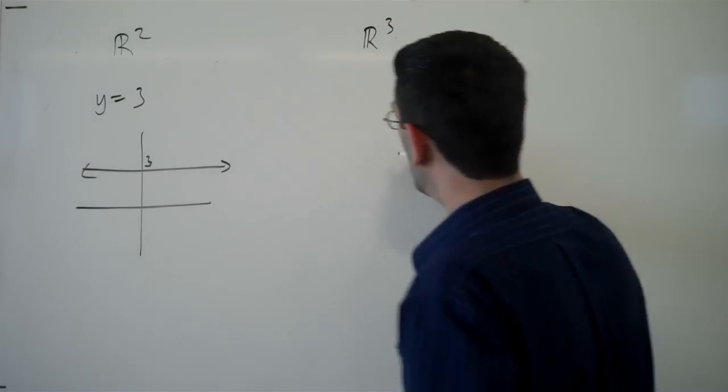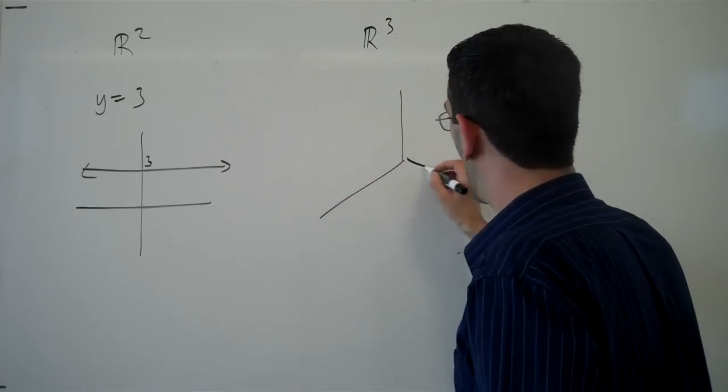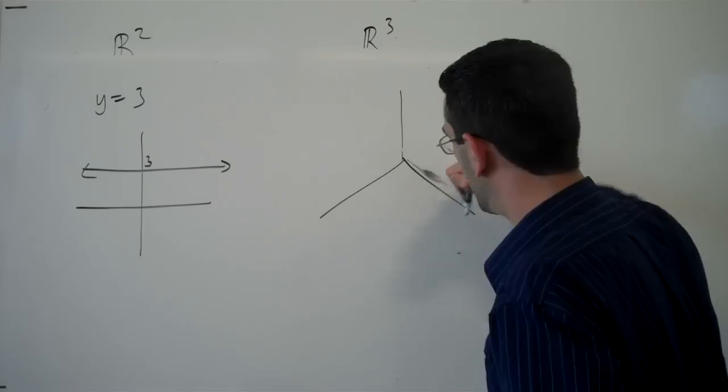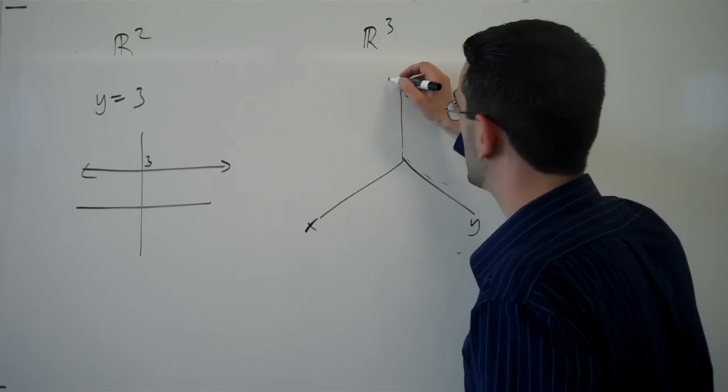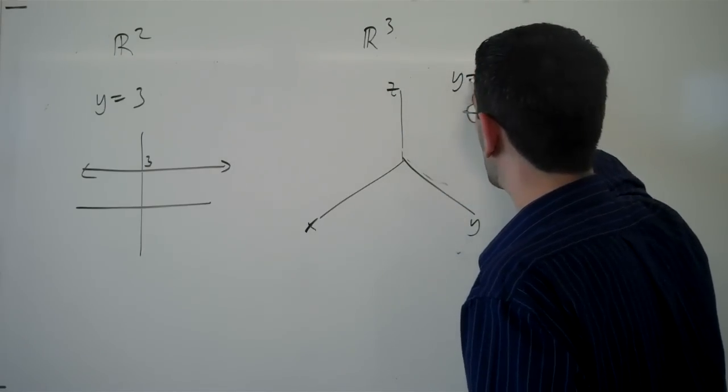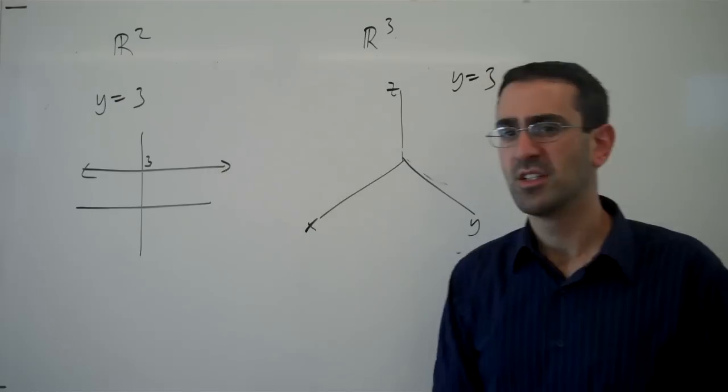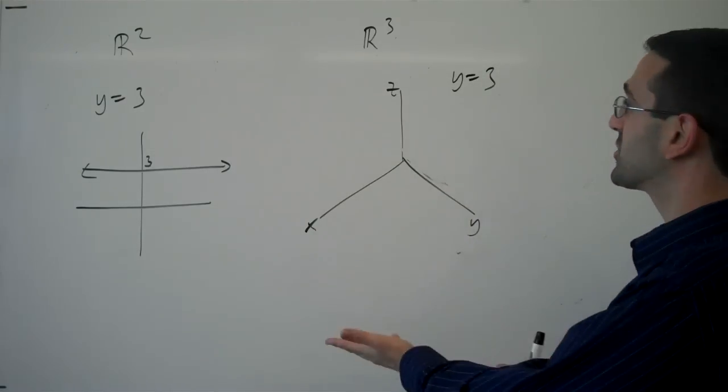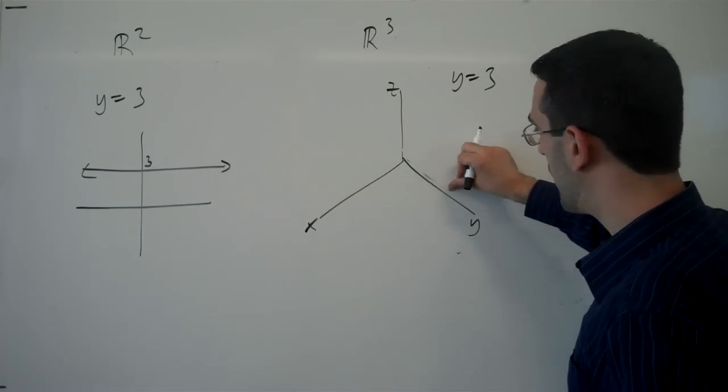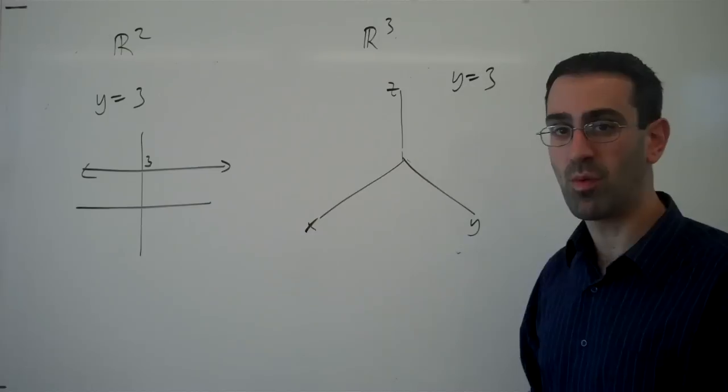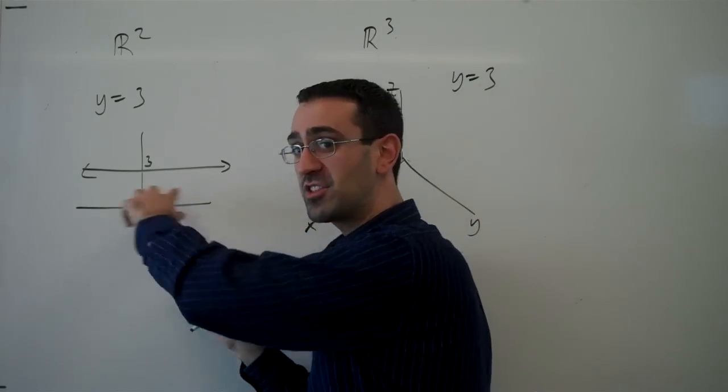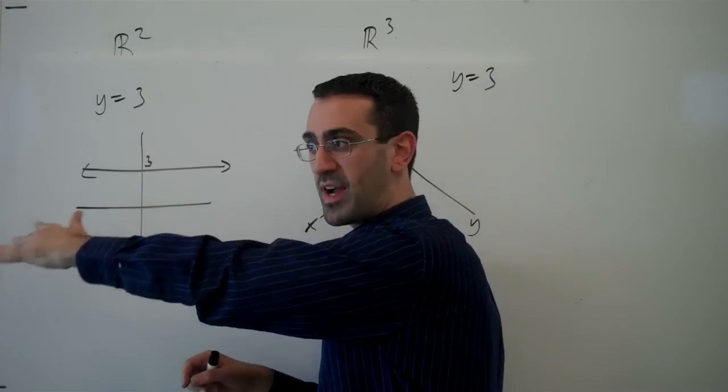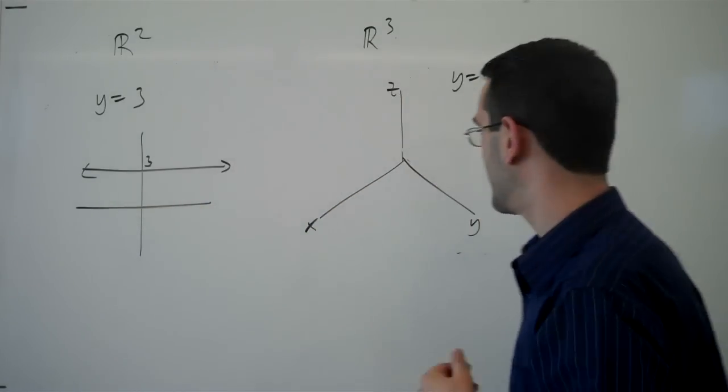So we might ask the question: in three-dimensional space, what do I describe if I write an equation like y equals 3? So now we're saying y equals 3, what are all the points in space that have a y value of 3? Now, over in two-dimensional space, x could vary keeping y constant and we get a line.